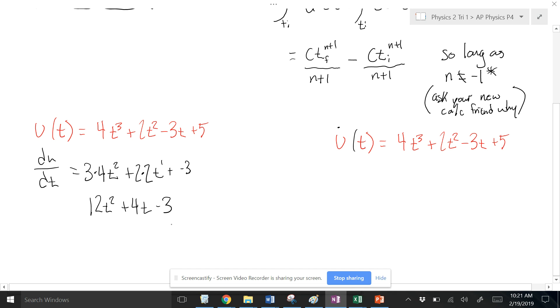So then if I want to know the acceleration at a specific time, right? If this was a velocity - make that a clearer V - if this was a velocity versus time graph, the slope would tell me about the acceleration. So if I want to know the acceleration at 1 second.